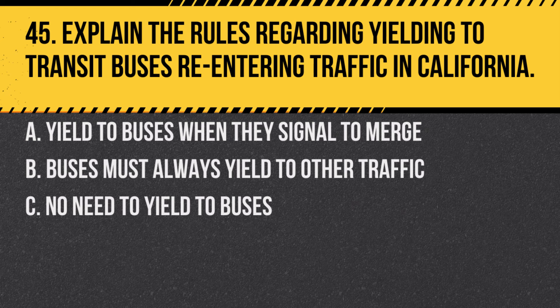Question 45. Explain the rules regarding yielding to transit buses re-entering traffic in California. A. Yield to buses when they signal to merge. B. Buses must always yield to other traffic. C. No need to yield to buses. Answer: A. Yield to buses when they signal to merge. This rule facilitates smoother traffic flow and public transportation efficiency.